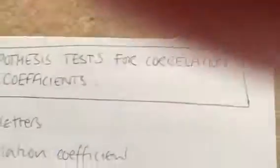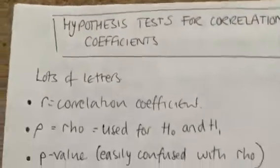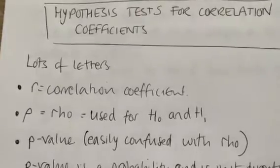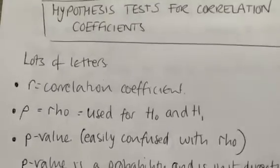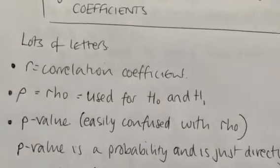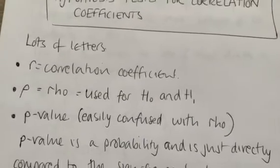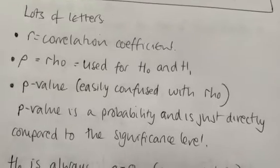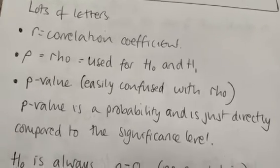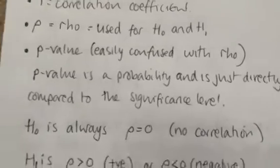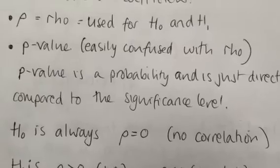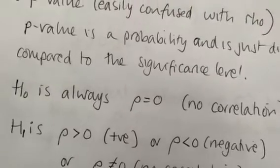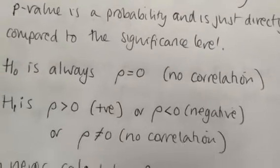For hypothesis tests on correlation coefficients, we have three letters to be precise. We have r, which is our correlation coefficient. We have rho, which we use for the null and alternative hypotheses — it's a Greek letter that looks like a slanted p. Then we have the p-value, which looks similar to rho but is actually a probability. The null hypothesis is always rho equals zero, meaning no correlation.